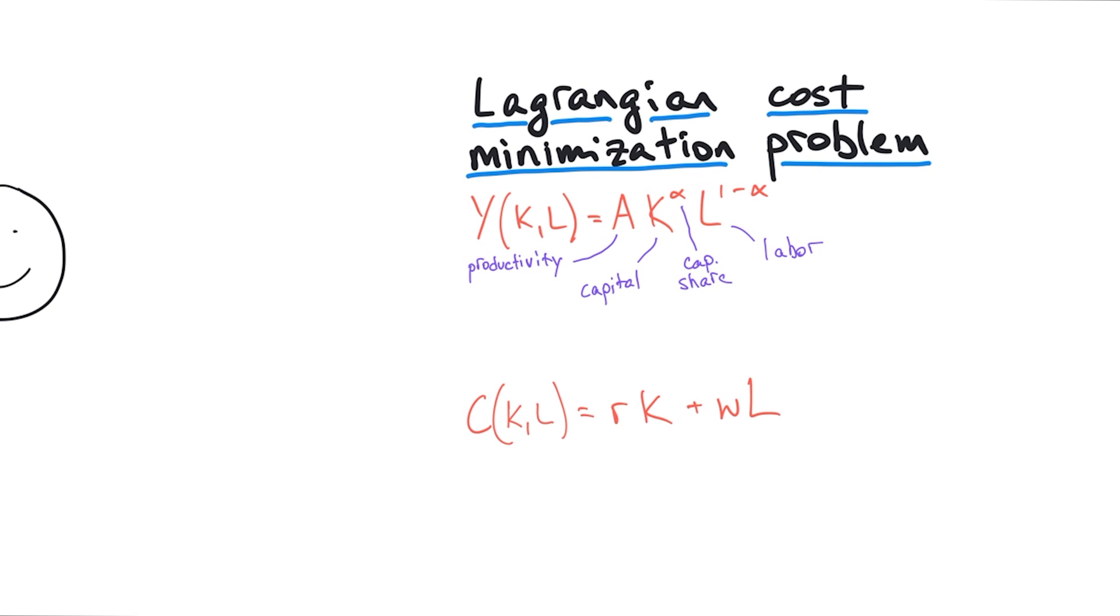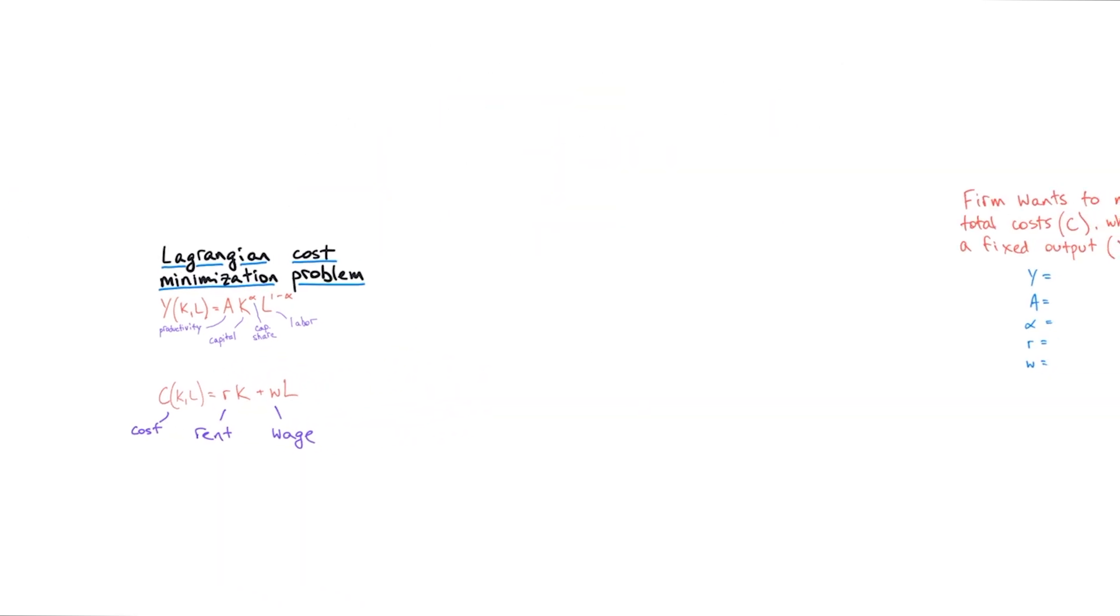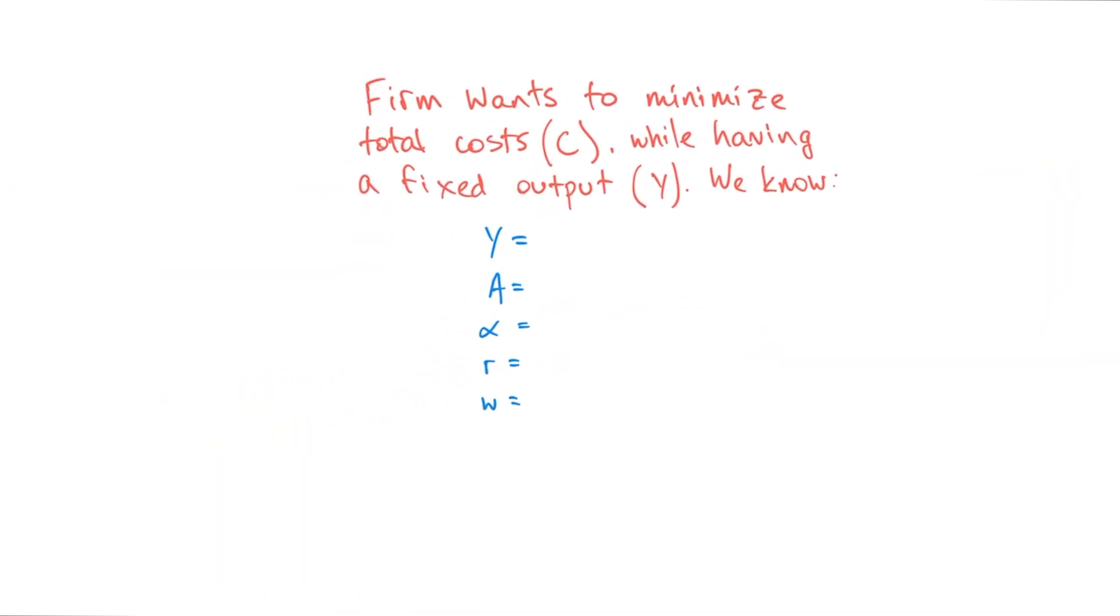But now we add another function: the cost function. It also has two variables, capital and labor, and two new parameters, R and W. They stand for rent and wage. Rent is the cost of your capital, so how much you have to pay for the fields or the machinery. W is the wage, or how much you pay your workers. Now let's get to the actual problem.